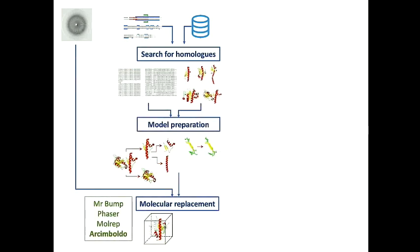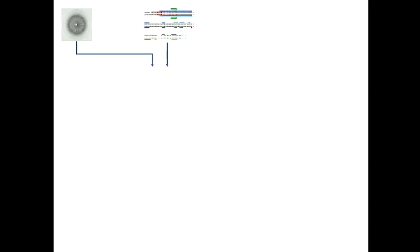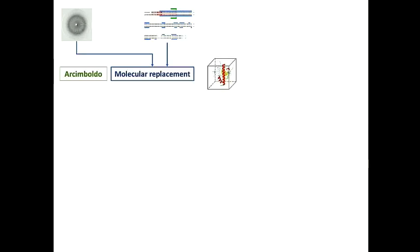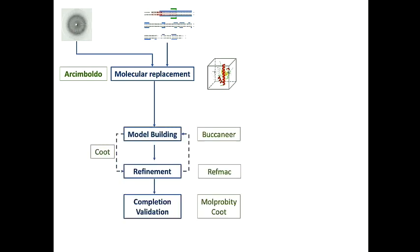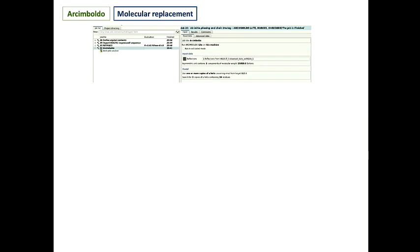Unfortunately, we didn't do that. We actually solved it initially with experimental phasing. In Archimboldo, this long pipeline becomes this. You just skip searching for homologues, you skip model preparation. You just need to have a good prediction of your secondary structure. In this case, we knew we had a long helix, so we were halfway there. Then, you can just do the other steps really easily.